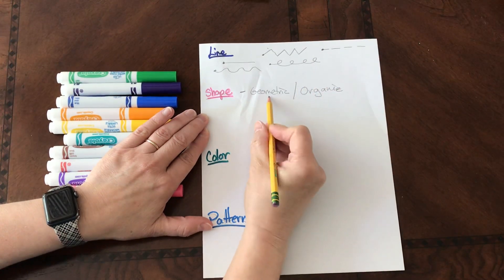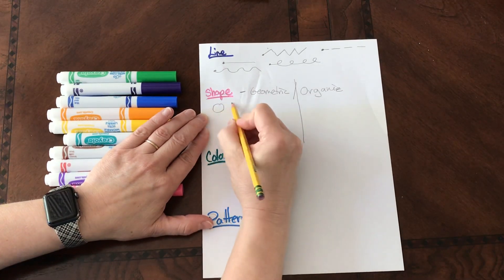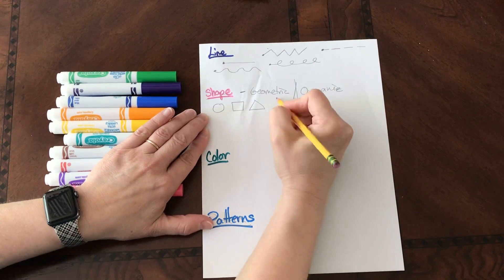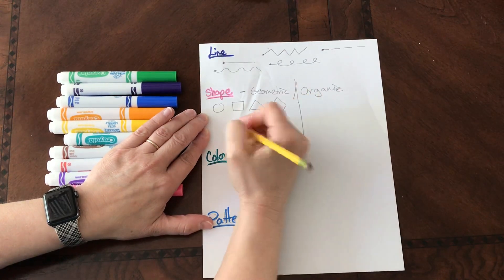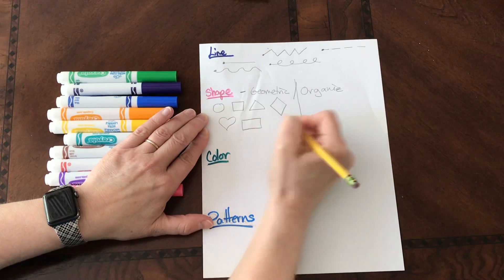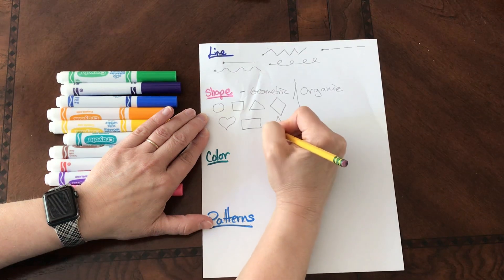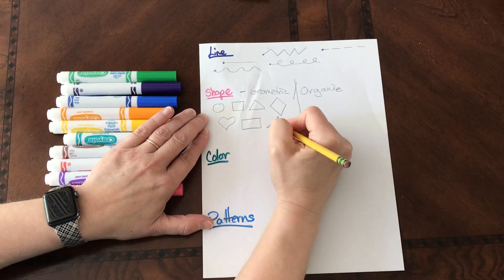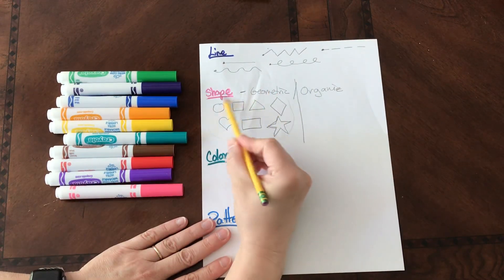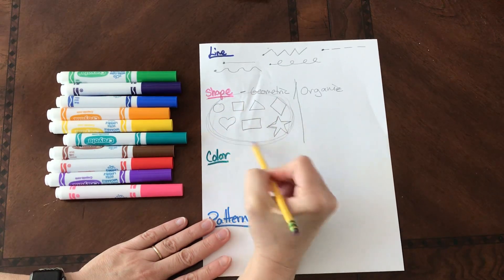Geometric shapes are like your circle and your square and your triangle and a diamond or a heart or a rectangle or a star. These are called geometric shapes. They're kind of like your math shapes, geometric shapes.